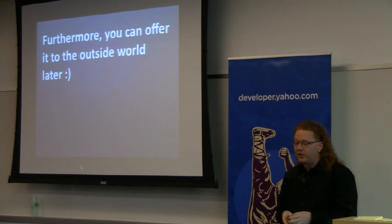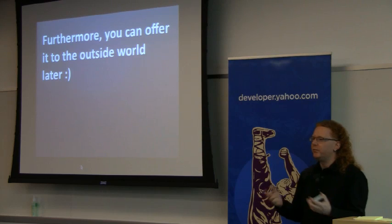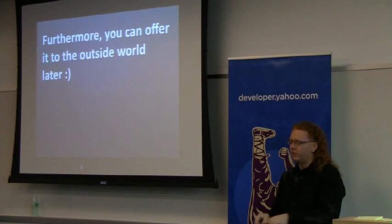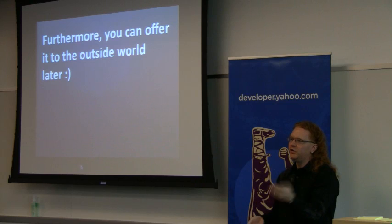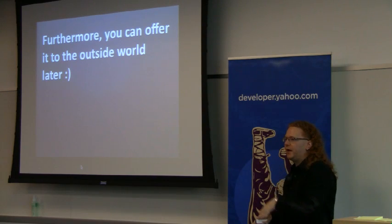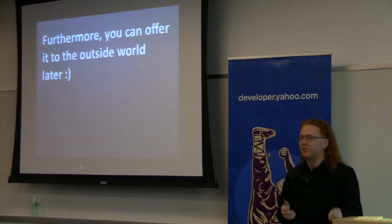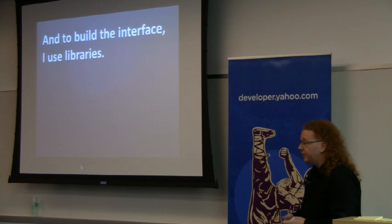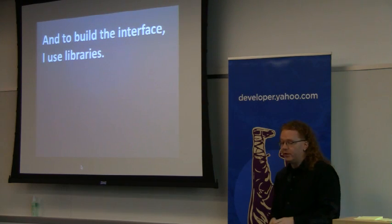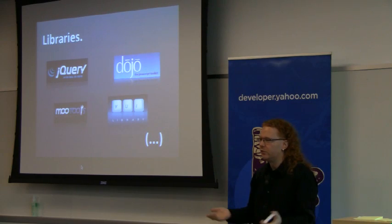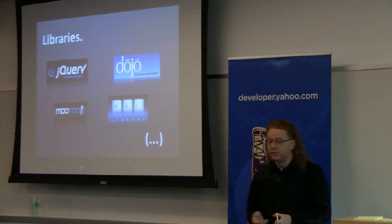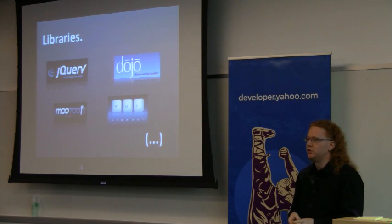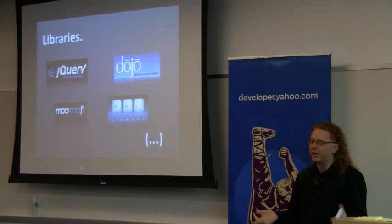Every time I build something with little APIs like that, I build the interface and then add a link saying 'use it yourself.' GeoMaker, the map platform shown earlier, has an API and three other websites are using it — which is cool because I just didn't want to answer their questions about how to do it themselves. To build the interface I normally use libraries. Yes, we're at Yahoo and I've used YUI for several years — it's still my favorite because it actually teaches you good development practices while you use it.